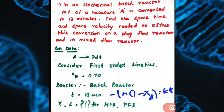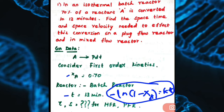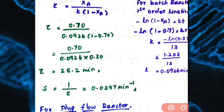For first order kinetics, the integrated rate equation is −ln(1 − XA) = K × T. Substituting the given values for the batch reactor: XA = 0.7 and T = 13 minutes. So, −ln(1 − 0.7) = K × 13, which gives K = −ln(0.3) / 13 minutes = 1.203 / 13.